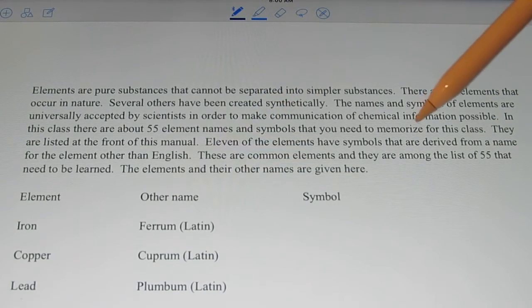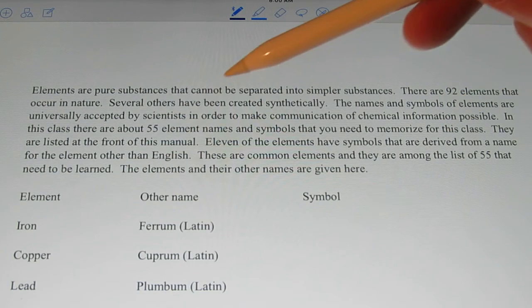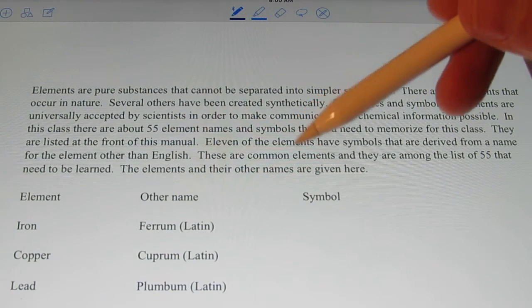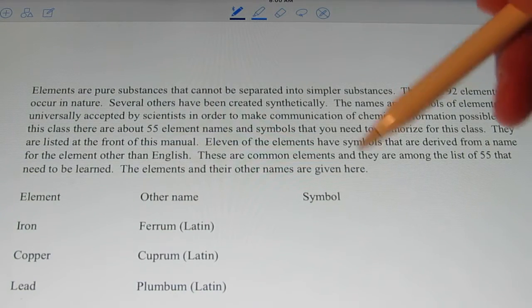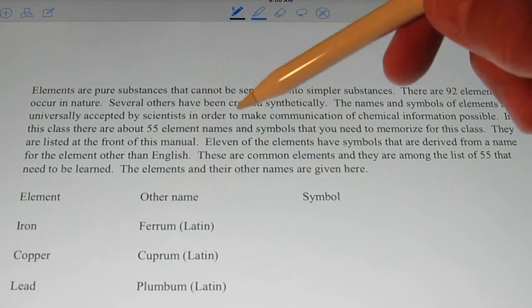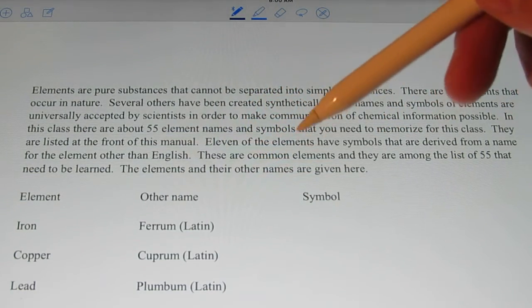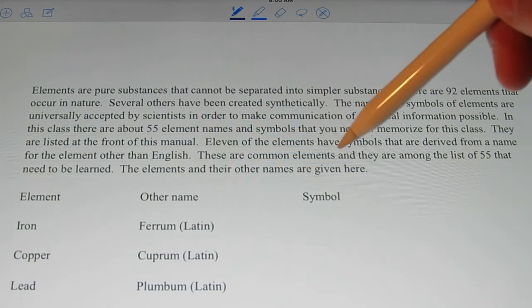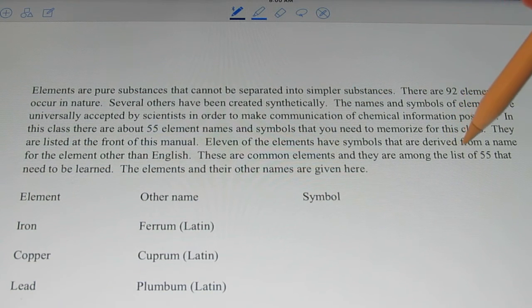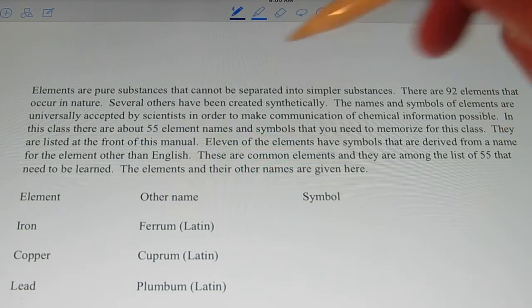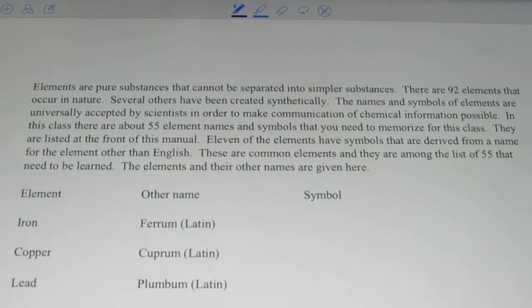Eleven of the elements have symbols that are derived from a name other than the English name. So you might think that the symbol has nothing at all to do with the name of the element, but you'll see that's not true. They're usually derived from a Latin name. These are common elements, and they are among the list of 55 that need to be learned. The elements and the origin of their names are given here.